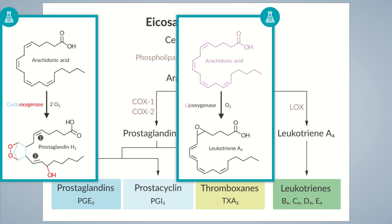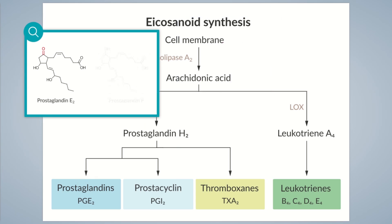In contrast, leukotrienes — also formed from arachidonic acid — have four double bonds, as indicated by the subscript four. Three of these four double bonds are conjugated, meaning they're separated by a single bond, giving rise to the suffix 'triene' in leukotriene. The prefix 'leuko' implies they're formed by leukocytes, or white blood cells. Prostaglandins E2 and F2, for example, differ in the functional groups on the ring: prostaglandin E2 has a ketone on its ring, while in prostaglandin F2 the oxygen atom is part of a hydroxyl group. These subtle differences result in frequent overlap in their effects.